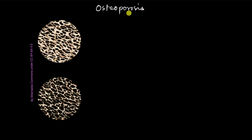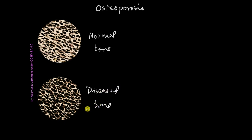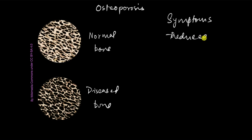Another bone disease which also affects older people more than others is called osteoporosis. 'Osteo' means bone and 'porosis' means pores. This is a normal bone cross-section, and this is a diseased osteoporotic bone. You'll notice there are more black regions in the diseased bone — it has less bone mass, minerals, and proteins than the normal bone. The symptoms are reduced bone mass, which weakens the bones, and as a result fractures happen very easily.